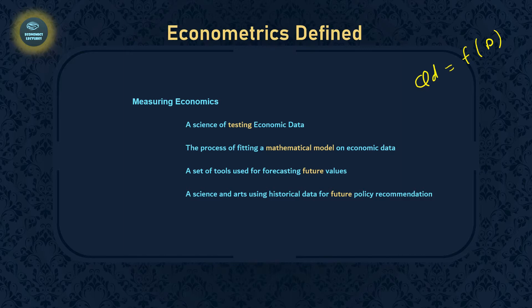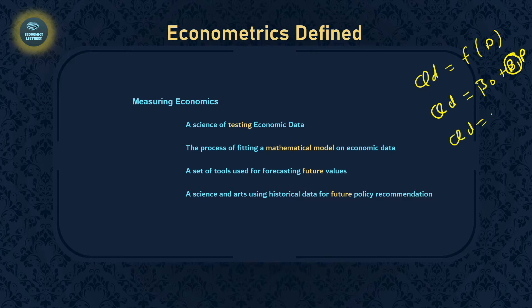The second is the algebraic form. We can write it as: QD = β0 + β1·P. This tells us that quantity demanded and price are related, and that when price increases by one unit, the change in QD equals β1. Since we know there is a negative relationship, we rewrite it as QD = β0 − β1·P, meaning increasing price by one unit decreases quantity demanded by β1 units.